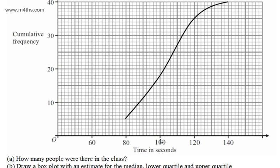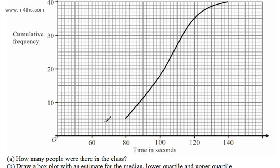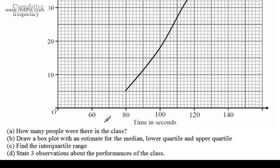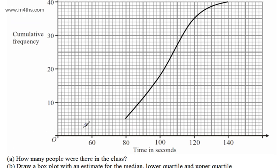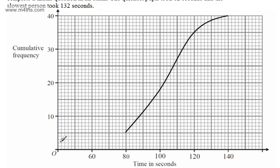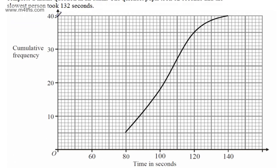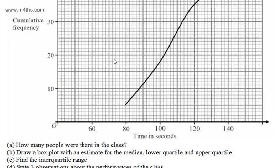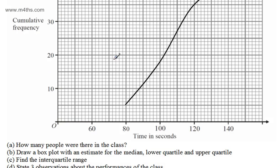We'll have grouped data for this. The first question, in part A, is how many people were there in the class? The cumulative frequency is the running total, so we can see there were 40 people in the class.